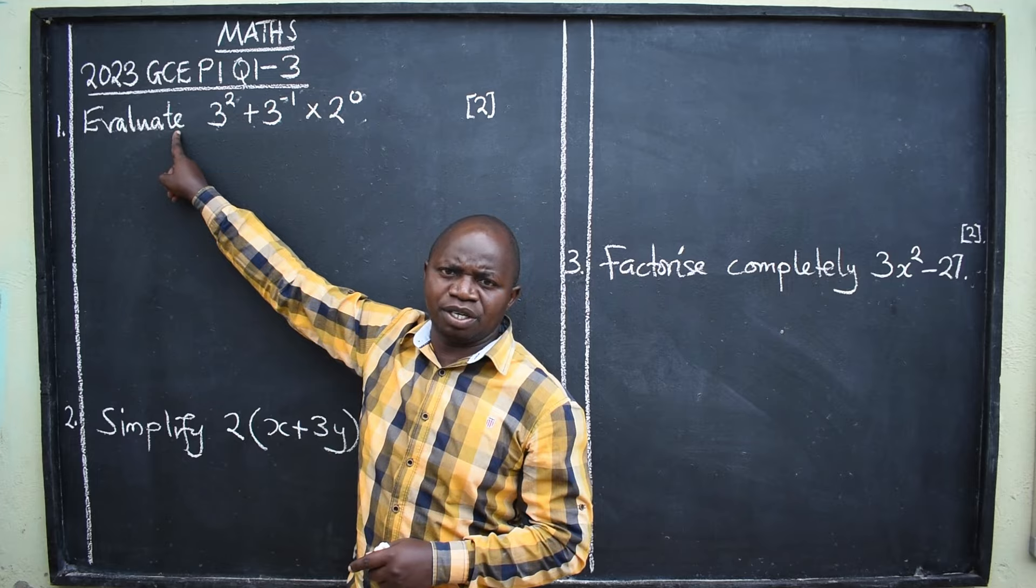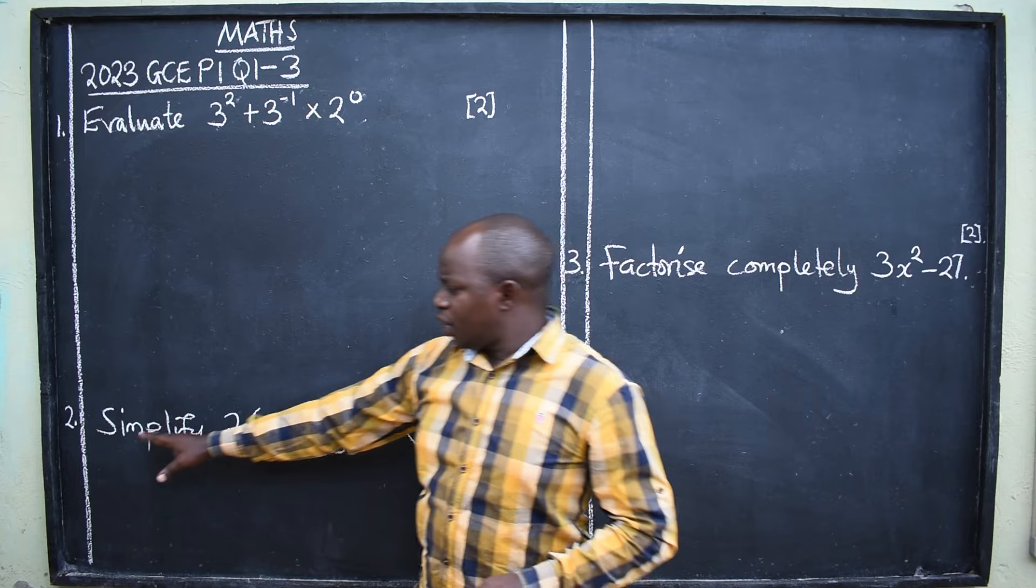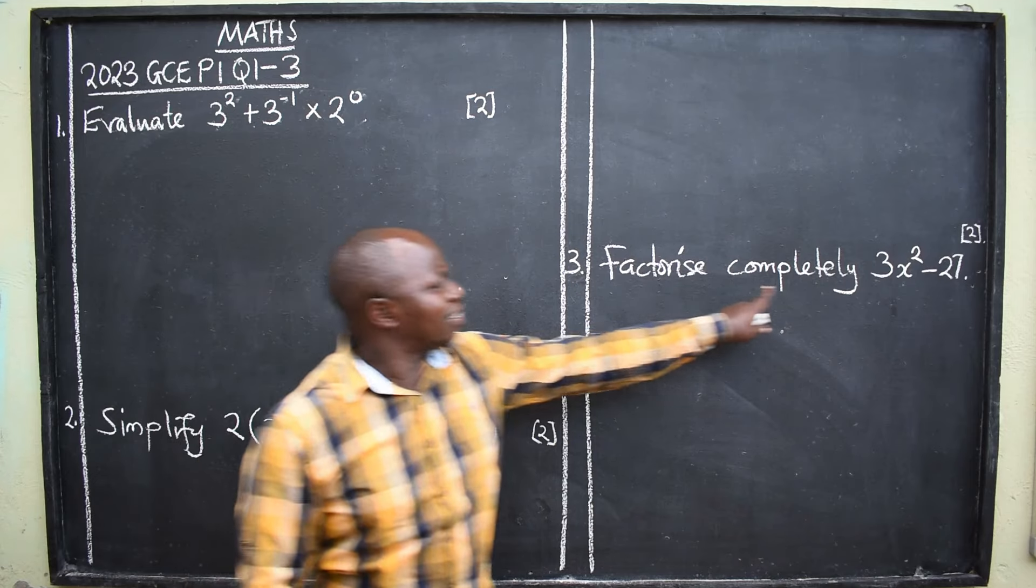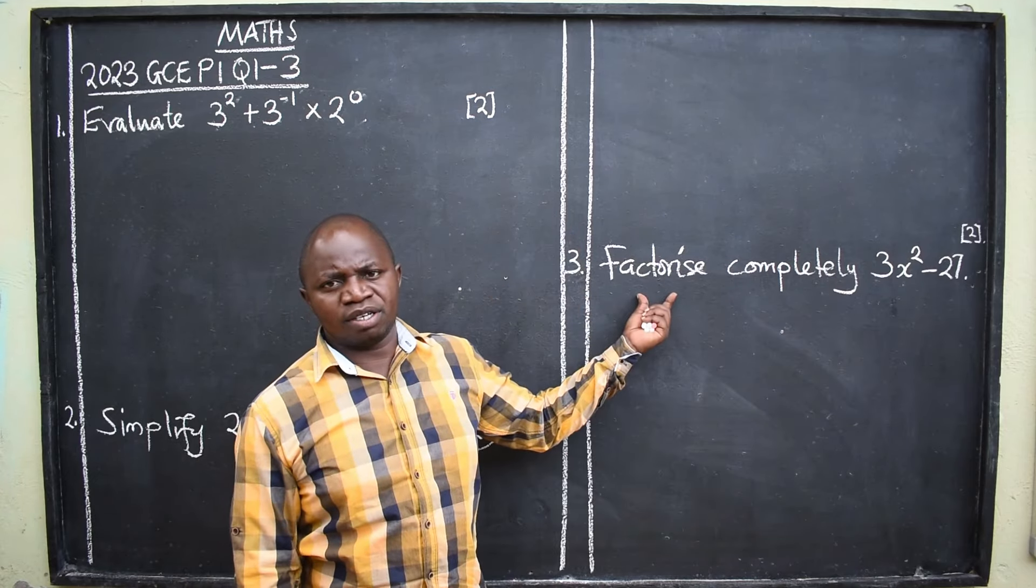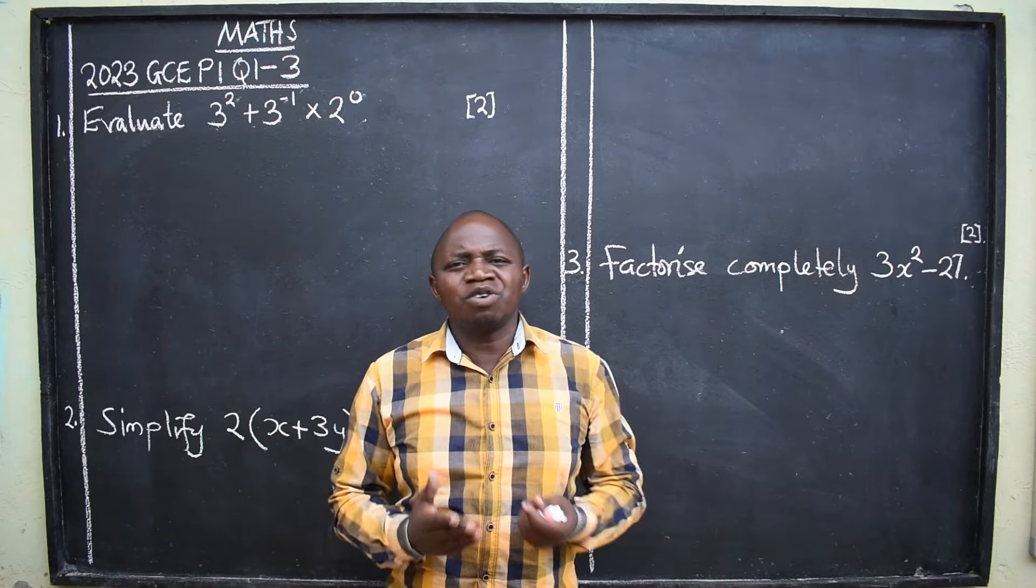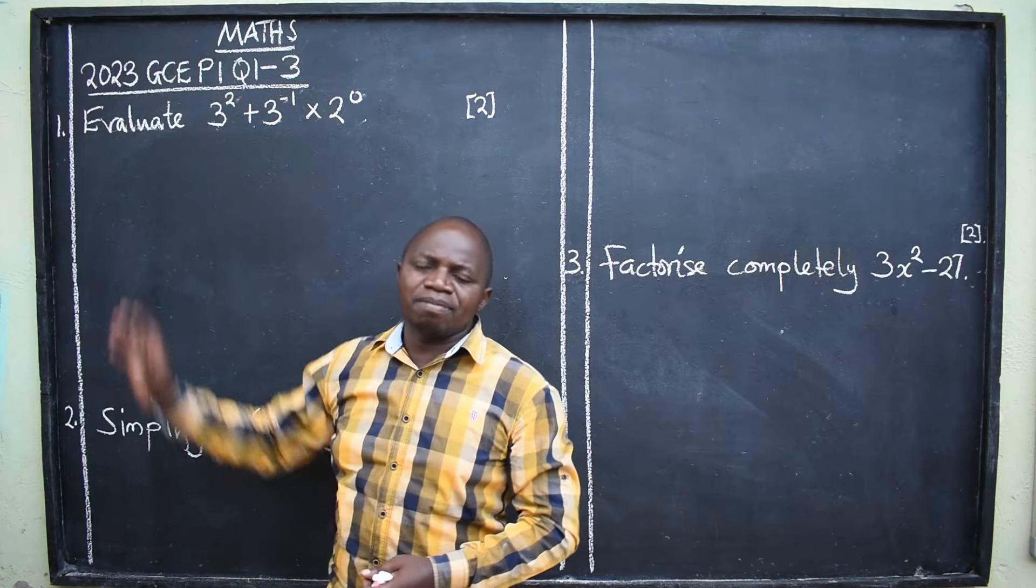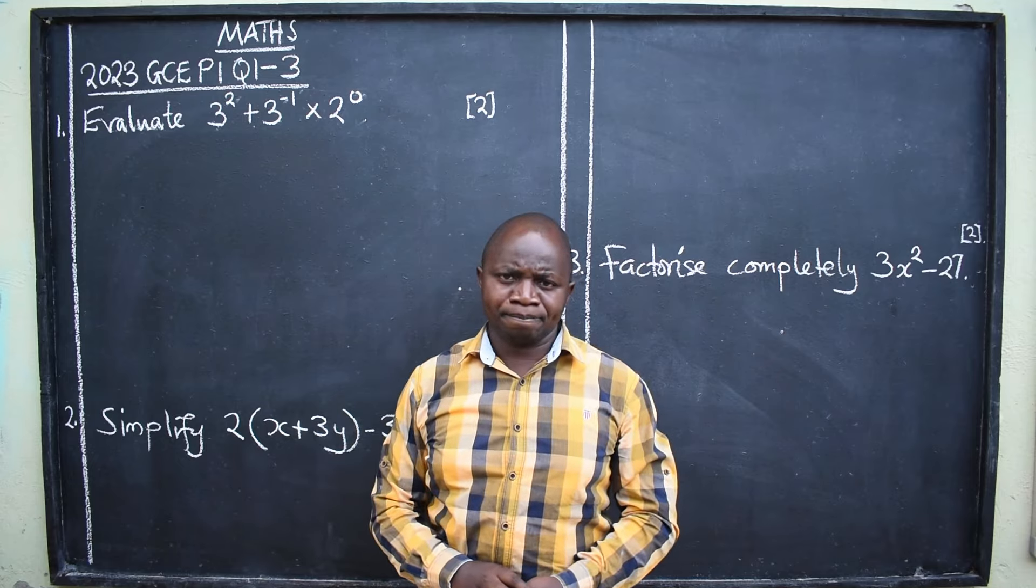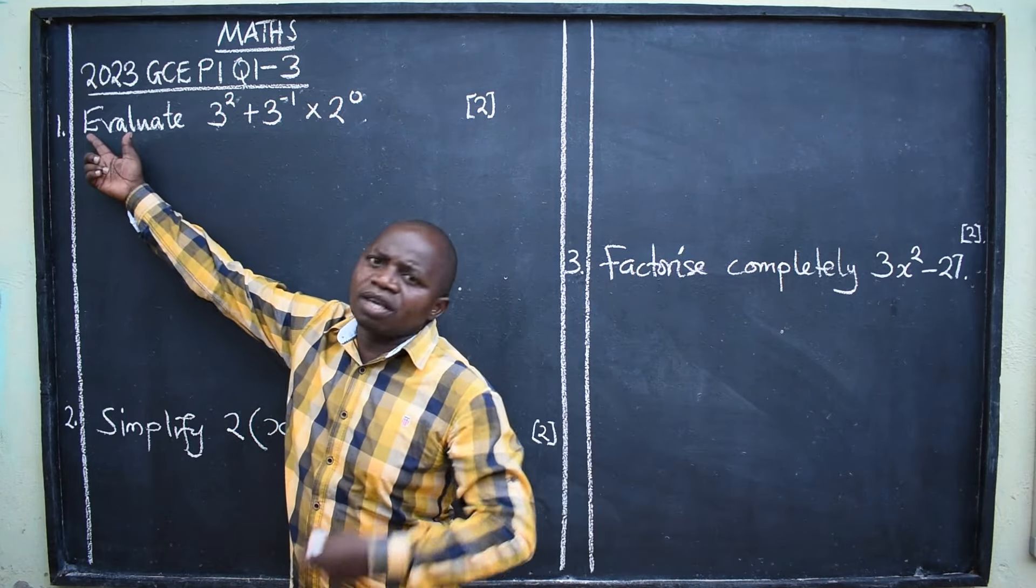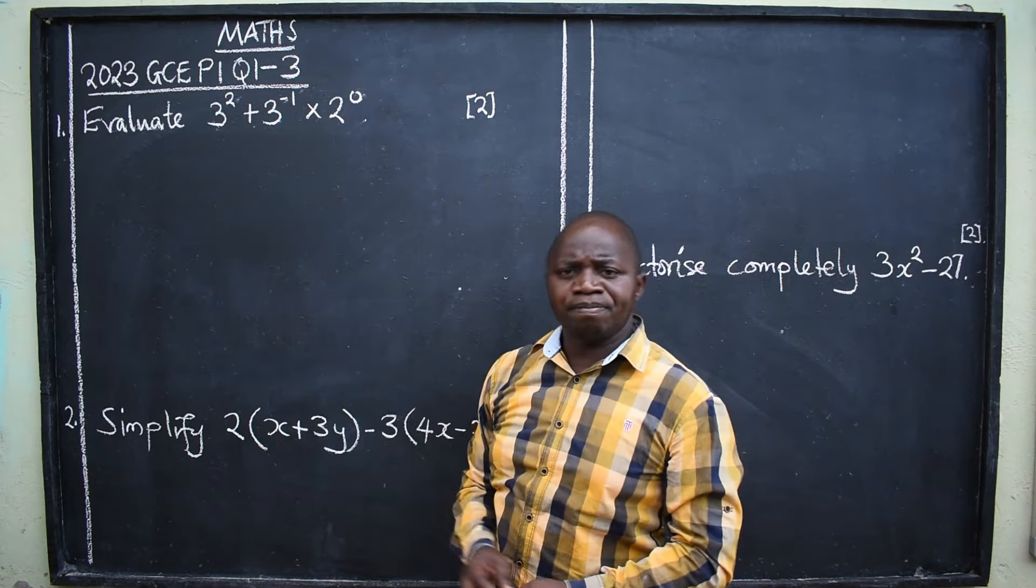So if you can't understand the meaning of evaluate, you will answer it in a wrong way. Simplify here. That is the stem of the question. Factorize here. That is the stem of the question. You can't start simplifying this. No. You are factorizing. That is what they want you to do. So you fail questions or exam, possibly not because you don't know how to go about it. But basically, you don't understand the stem of that question. Now that we know that this is coming from indices, and the stem here says evaluate, meaning you find the exact value of this. How do we go about it?